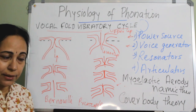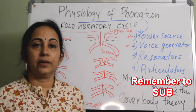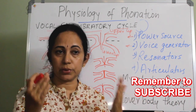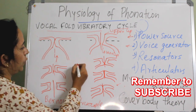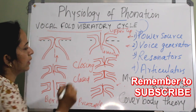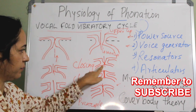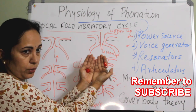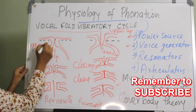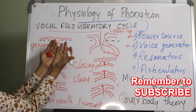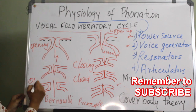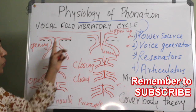Once the pressure drops, the mucosa is sucked into the space and closing begins again. In one vibratory cycle, there are periods of vocal folds in contact and not in contact. We can divide this into four phases: closing phase, closed phase, opening phase, and open phase. The closing phase starts from the lower lip, then both upper and lower lips are closed. Opening again starts from the lower lip, and the open phase is the longest phase of the vibratory cycle.